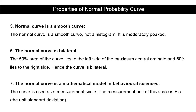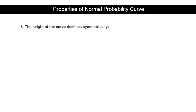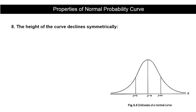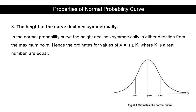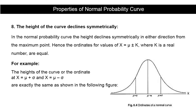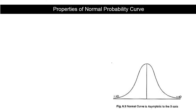The eighth property is that the height of the curve declines symmetrically in either direction from the maximum central point. The ordinates for values of x represented by μ ± k (where k is a real number) are equal. For example, the heights at x = μ + one standard deviation unit and x = μ − one standard deviation unit are exactly the same.